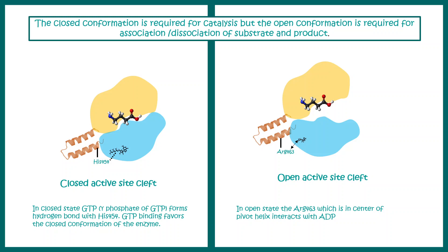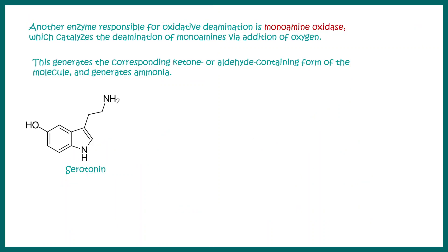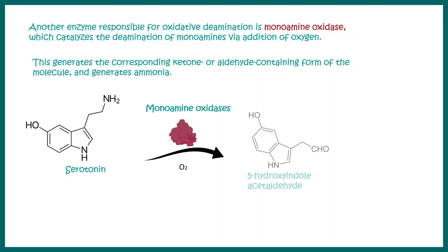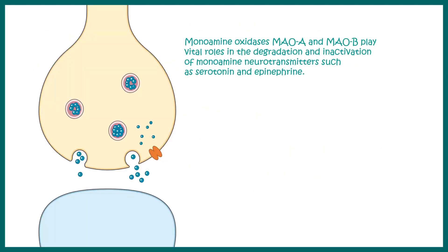Another enzyme important for oxidative deamination is monoamine oxidase. Monoamine oxidase converts neurotransmitters such as serotonin into a corresponding aldehyde, ultimately freeing up ammonia. This means degradation of neurotransmitters such as epinephrine and serotonin requires monoamine oxidase A and monoamine oxidase B.